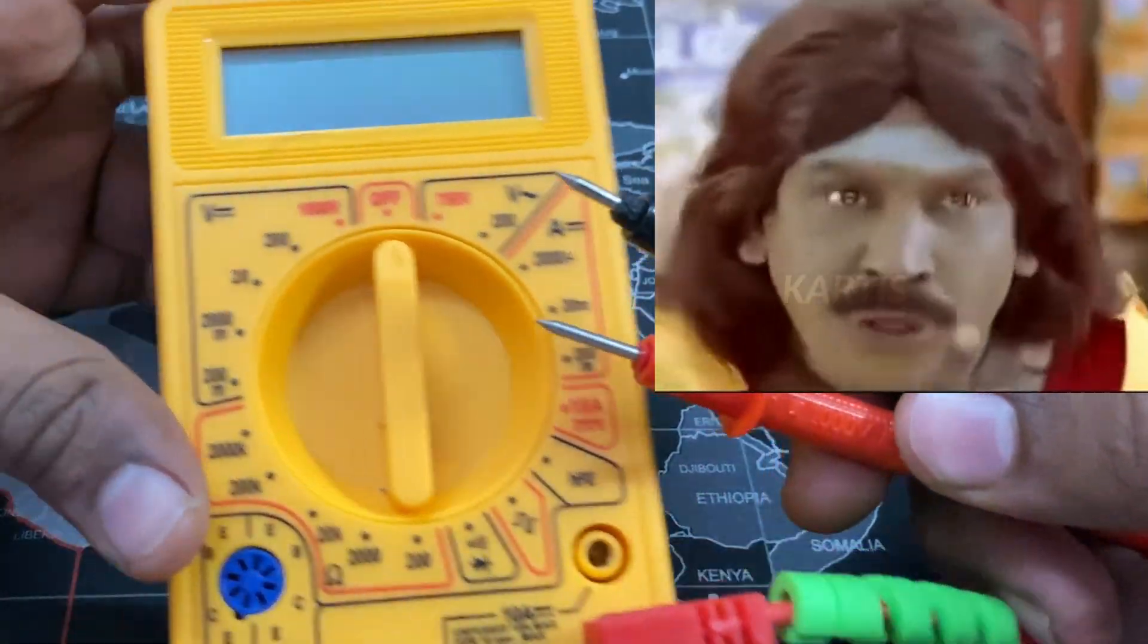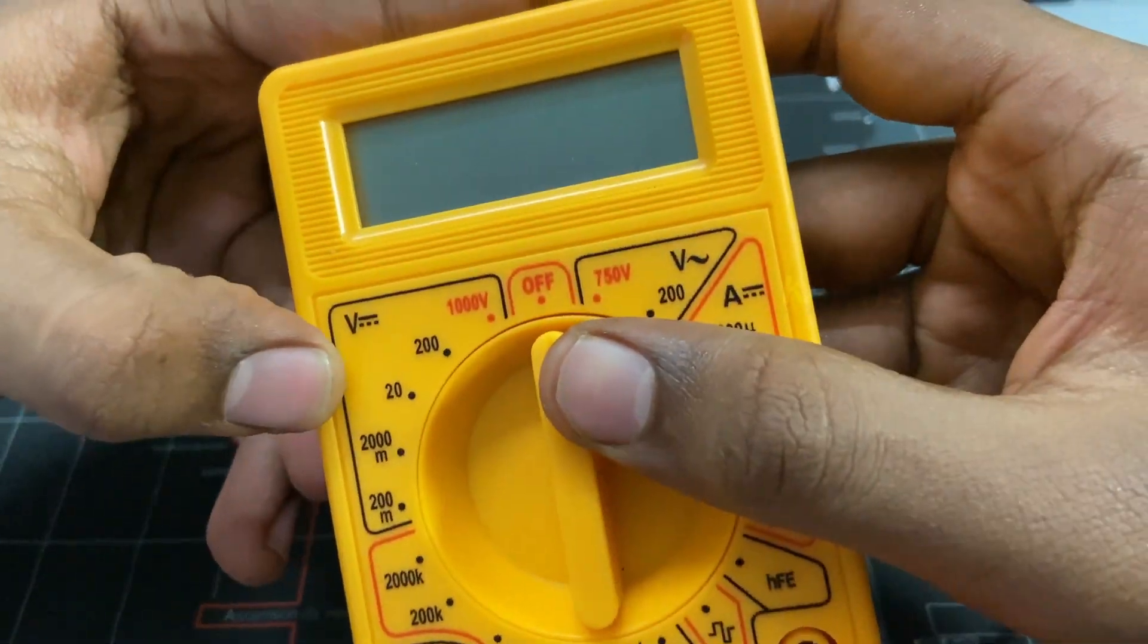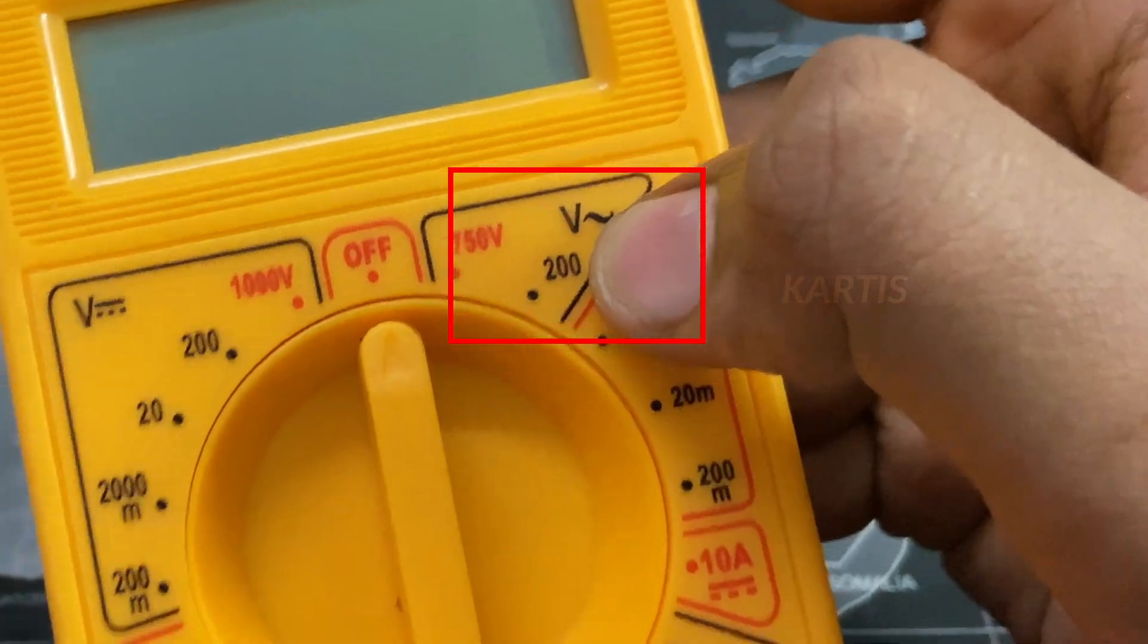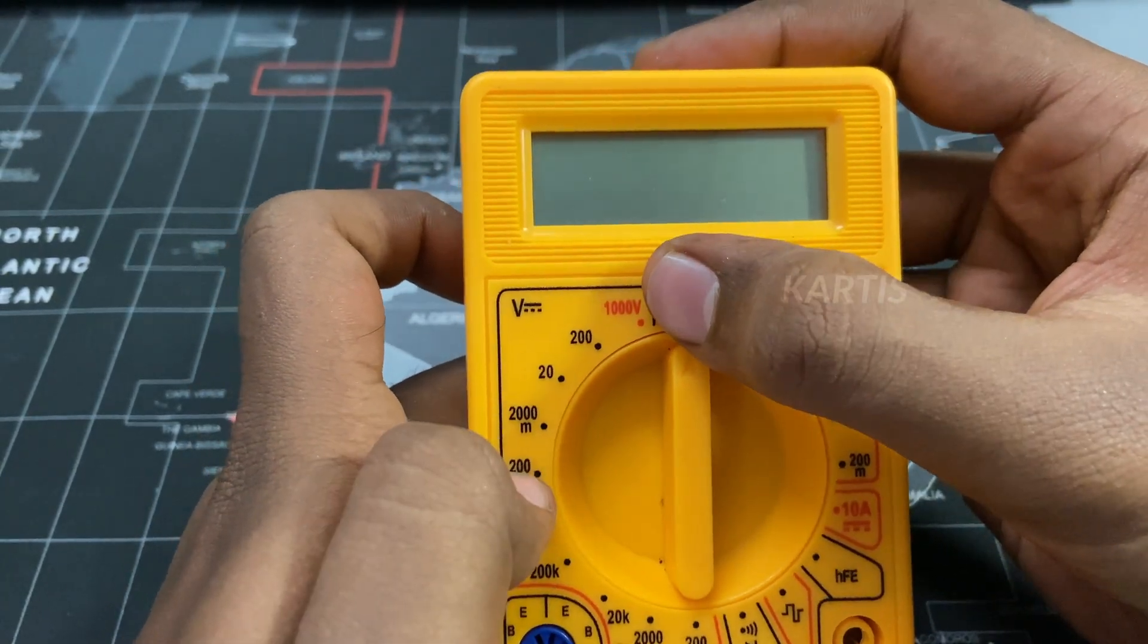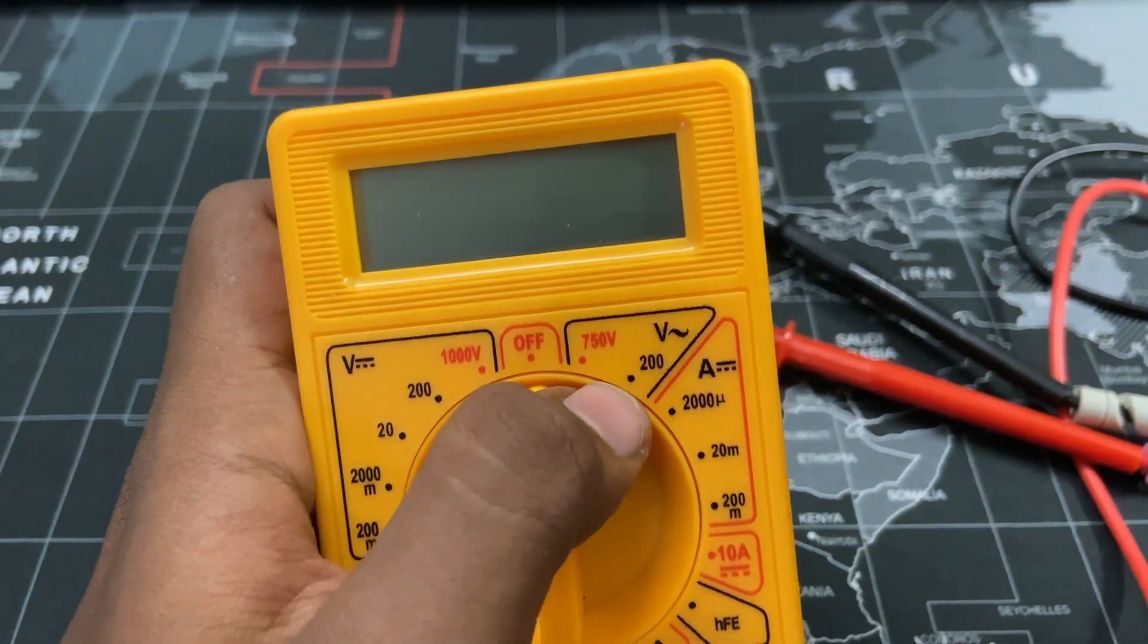Now, these two are DC. For this, there are DC and AC. There are different symbols. Now, there is a line here for DC, but there are waves for AC. As you can see, there is AC voltage and DC voltage. There are two knobs.